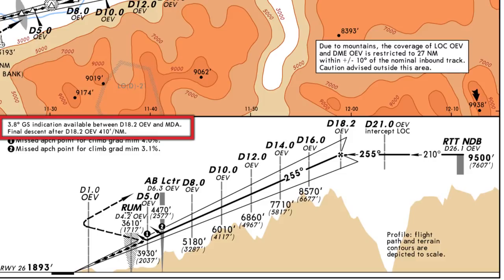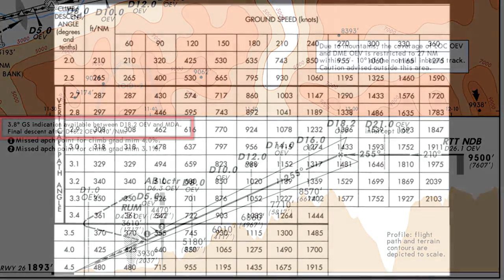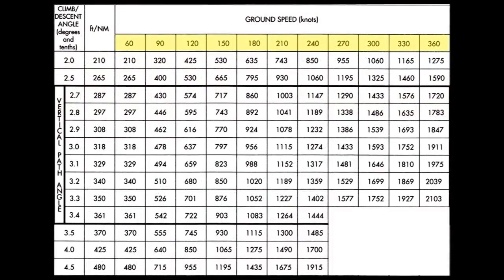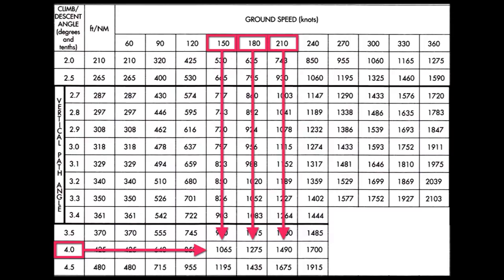To find out our required rate of descent, we'll go to the rate of descent chart, or as we call it, the cheat sheet. The top row denotes our ground speed — not indicated airspeed, not true airspeed, but ground speed. On the far left column we have the glide slope pitch or vertical angle. This sheet doesn't have 3.8 degrees but the closest is 4 degrees. Following that row across, for 150, 180, and 210 knot columns: since we're landing runway 8 with the wind usually from behind us, our ground speed will be higher than a headwind approach.